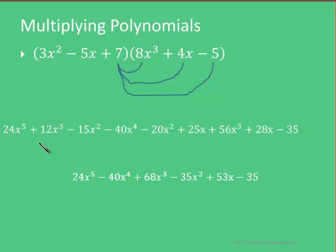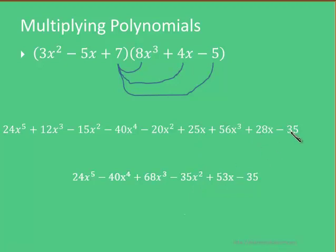So we end up with 24x to the fifth, then minus 40x to the fourth, then 12 and 56 gives us 68x cubed. Then minus 15 and minus 20x squared gives us minus 35x squared. And then 25x and 28x gives us 53x. And we're left with minus 35. Okay, so let's take a deeper look at this now.